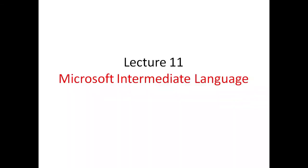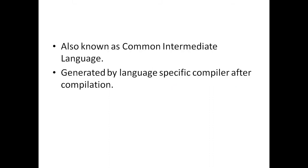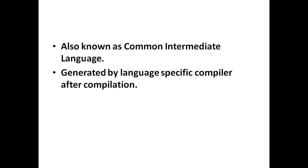This is our 11th lecture and we will be looking at Microsoft Intermediate Language, also known as Common Intermediate Language. There are many languages that the .NET Framework supports. For each language, a different compiler is used for compiling the source code. The code generated by these compilers is known as MSIL, i.e., Microsoft Intermediate Language.